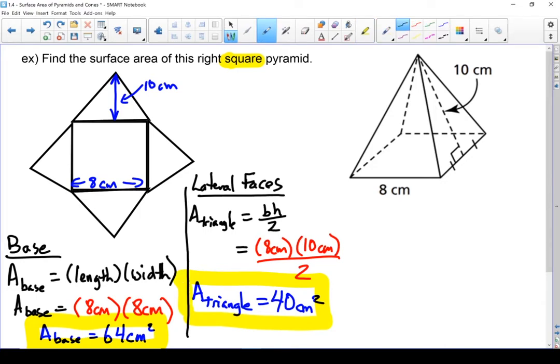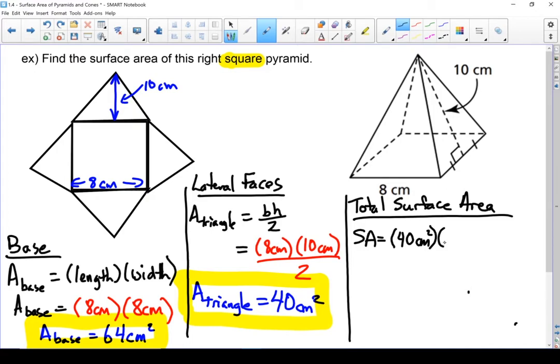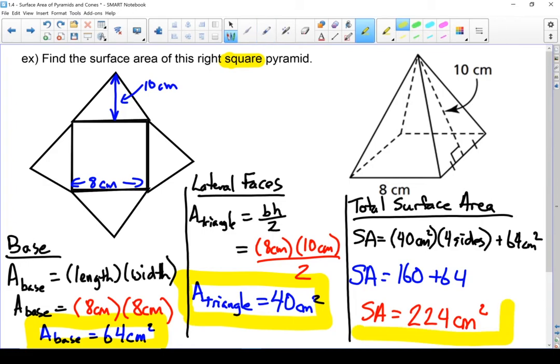Let's move on to our total surface area. So our surface area equals our lateral area plus our base area. Now we've got four triangles for our lateral area. Each triangle is 40 centimeters squared and we've got four sides and we're going to add in our base, which is 64 centimeters squared. 40 times 4 is 160 plus 64 means my total surface area equals 224 square centimeters. That's the surface area of my right square pyramid.